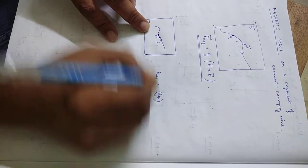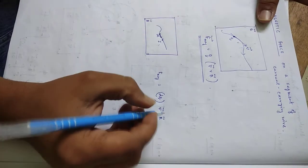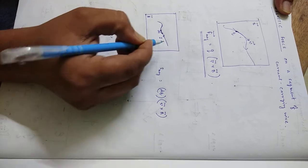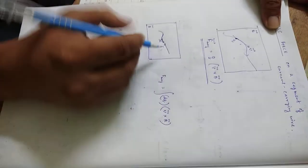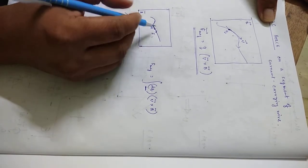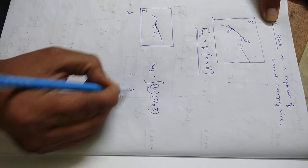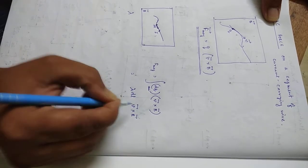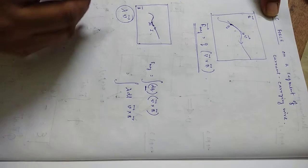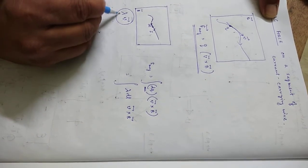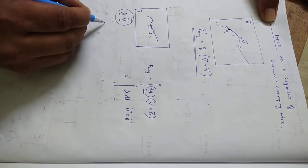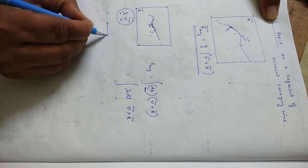Let's call the charge in the element DQ. We want to calculate the total magnetic force on this current segment, which means I need to integrate over the whole wire. Now, what is DQ? If lambda is the line charge density, then DQ can be written as lambda DL. So the force element is lambda DL into V cross B. Now understand this: lambda means per unit length there is lambda amount of charge in that wire, and V is the velocity of those charge particles — the distance those charges cover per unit time.